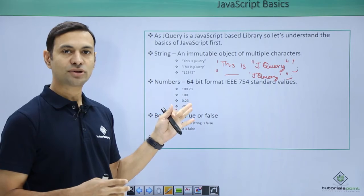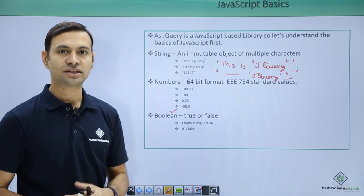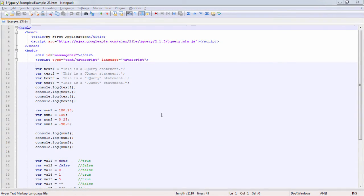Let's see examples of these basics in our practical session. In this example, we are going to cover various JavaScript basics like string, decimal numbers and booleans. Text1 here we have defined as simple string enclosed by double quotes.